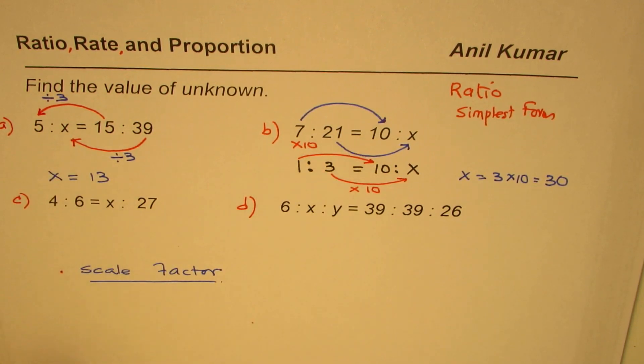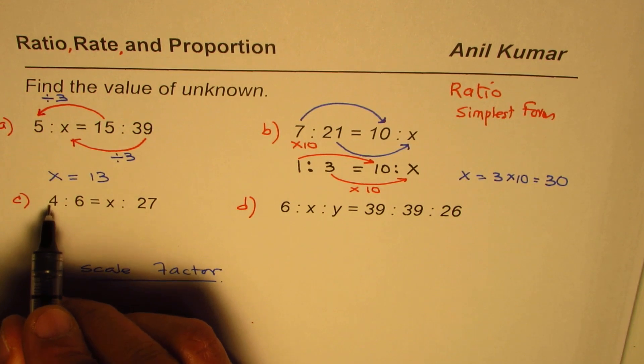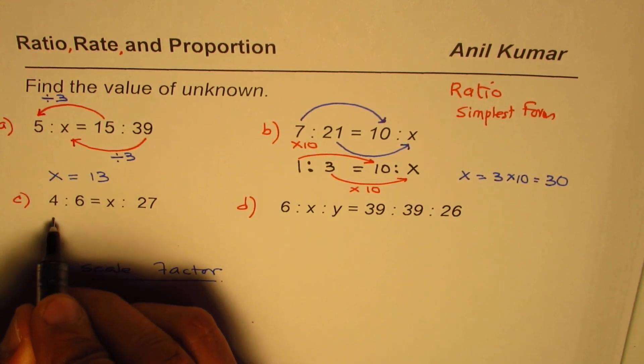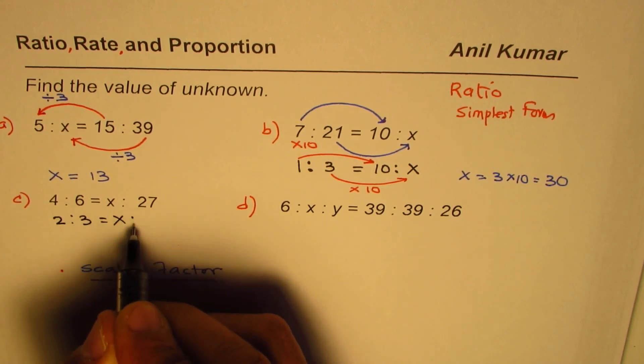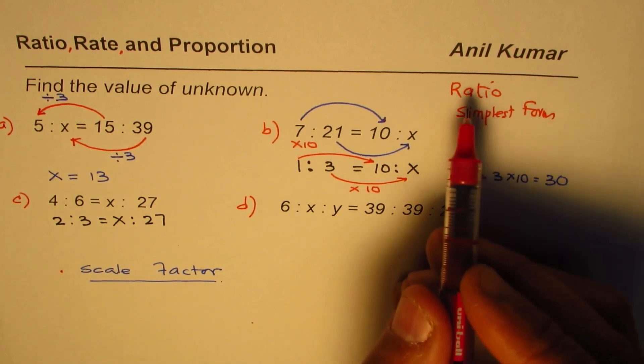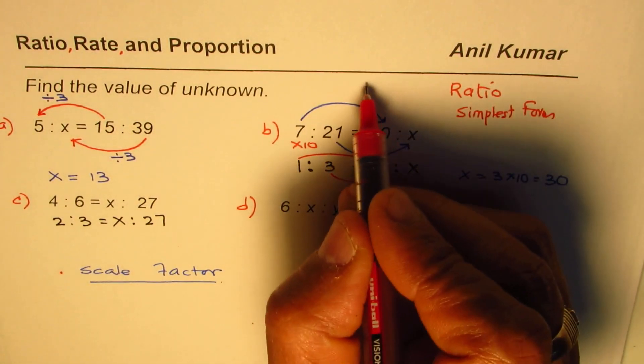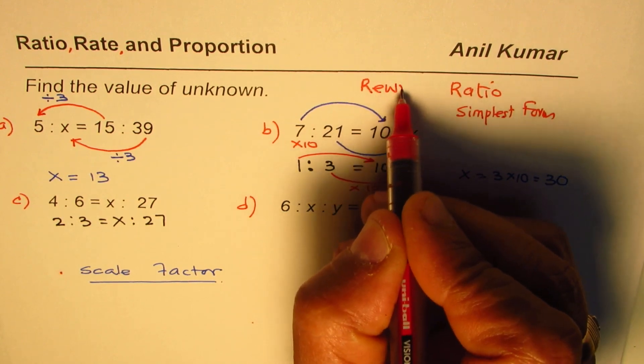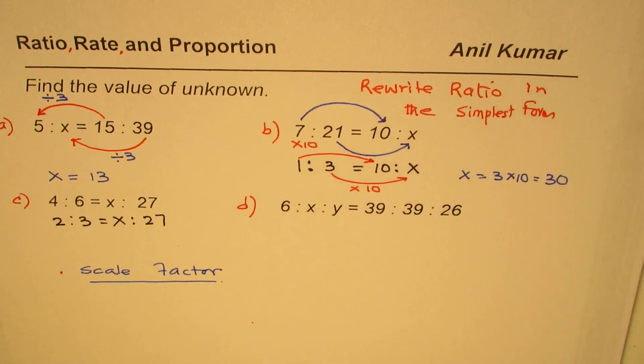So let's first simplify. 4 and 6 can be divided by 2. So it is 2 is to 3 equals to x is to 27. So the idea is write ratio in the simplest form. That's a complete sentence.